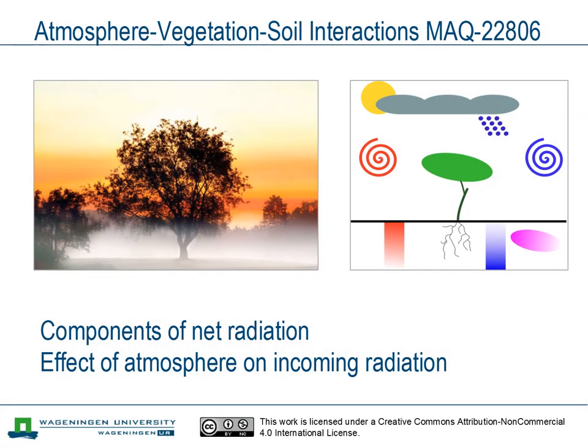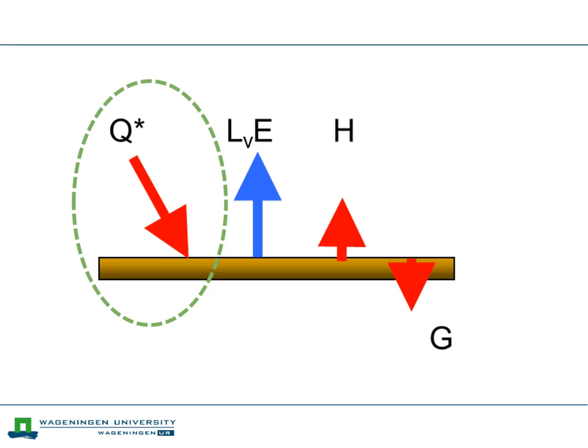In this clip we will introduce the components of net radiation. In particular we will focus on the role of the atmosphere in determining the downwelling radiation at the surface. Net radiation is the driving force of the surface energy balance. During daytime the supplied energy is removed from the surface by the latent heat flux, or evapotranspiration, sensible heat flux and the soil heat flux. At night on the other hand, the net radiation usually acts as a loss term for the surface energy balance.